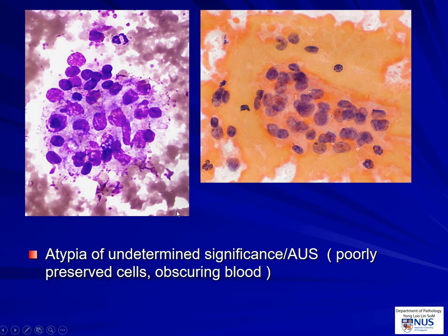Here is another case, which is different because the atypical features lie more in the nuclei. There is a hint that the nuclei are somewhat pale and oval. There may be small nucleoli, but it's difficult to be sure because of the artifactual changes and entrapment in blood clots. This would be an example of the atypical category with nuclear atypia.